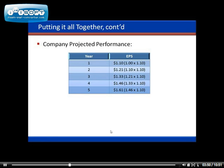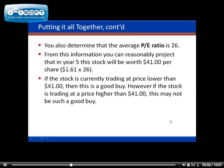You also determine that the average P/E ratio is 26. From this information we can now project the actual stock price, because remember: earnings per share times the price-earnings ratio gives us the market price of the stock.